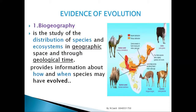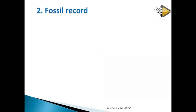For example, why do humans have different skin colors? We can use biogeography to explain this, because humans are located in different environments. People from hot areas have different skin colors, and this helps us understand how organisms evolved.